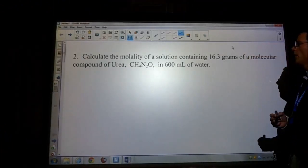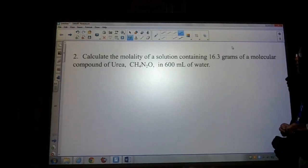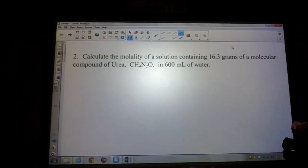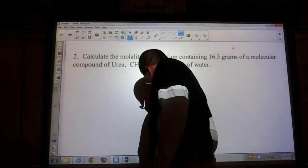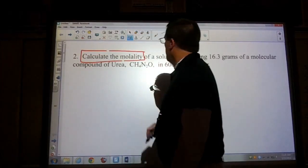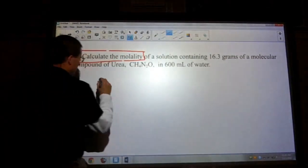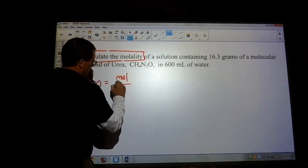Question number two, calculate the molality of a solution containing 16.3 grams of a molecular compound urea CH4N2O in 600 milliliters of water. So the first thing that we have to realize is what the question is asking here. We're looking for the molality, and the molality is not molarity, but it's moles per kilogram.